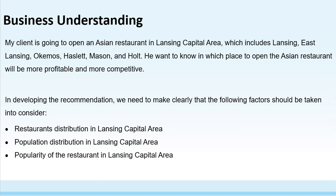The first factor is the current situation of restaurants in Lansing — we need to know the distribution of restaurants. Then, as we know, guests are very important for a restaurant, so we need to know the population distribution in each region. Lastly, we also need to know what is the most popular restaurant type in each region.